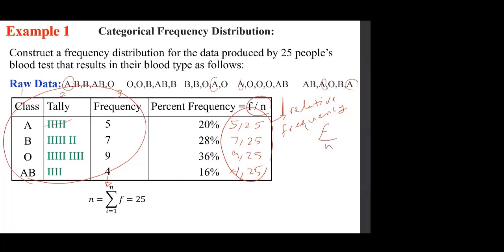The relative frequency formula is f over n. You can change it to a percentage and call it percent frequency. When you add up this column, the relative frequencies or percent frequencies must all add up to 1 or 100%. If they don't, it is because of rounding error. This is the synopsis of the frequency distribution table.